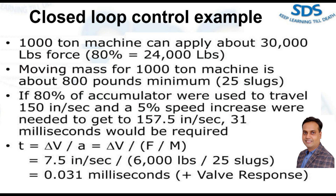Now let's consider a scenario when the machine is operating at 80% accumulator usage and traveling at a speed of 150 inches per second. Suppose a 5% speed increase is required to reach the target speed of 157.5 inches per second.